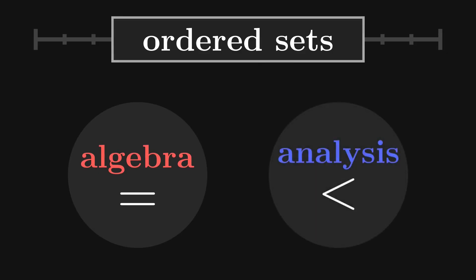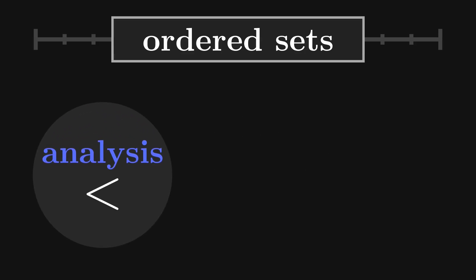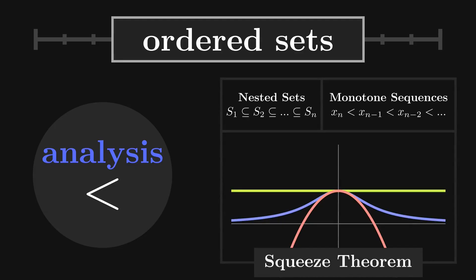In analysis, there is a greater emphasis on approximations, comparisons, and the local behavior of functions around a point. While statements about equivalence do appear in analysis, they often arise as consequences of some underlying order or limiting process.